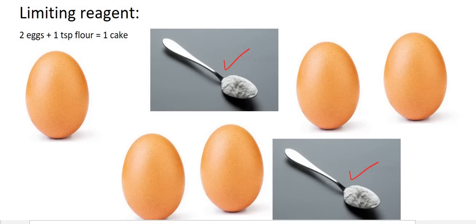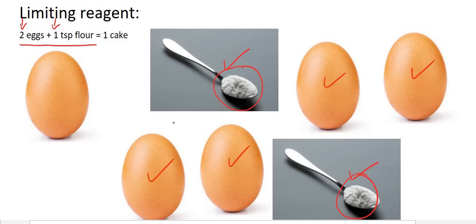Remember, you have to always follow the recipe. The recipe says that you must use two eggs for every teaspoon of flour. So if we wanted to use all of the flour, that would mean we would need four eggs — and look, we have enough. Now, what are we going to do with the extra egg? Maybe we could make a third cake — no, that's not going to work.